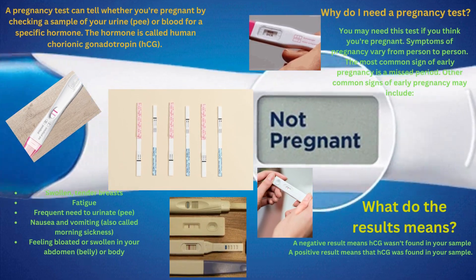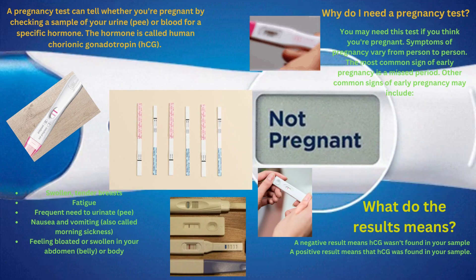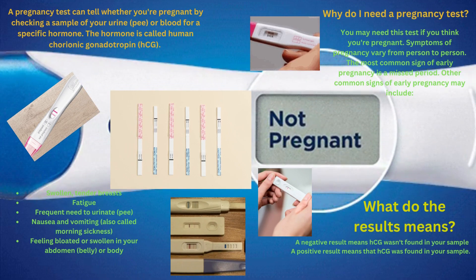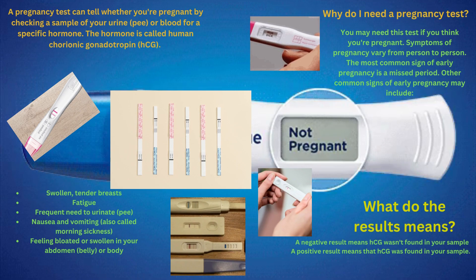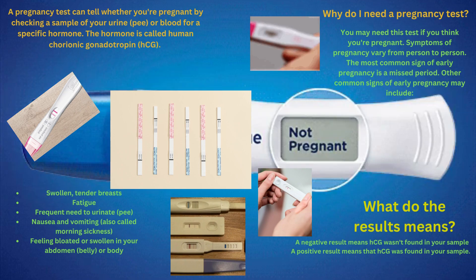Pregnancy Test. A pregnancy test can tell whether you are pregnant by checking a sample of your urine or blood for a specific hormone. The hormone is called hCG (human chorionic gonadotropin).